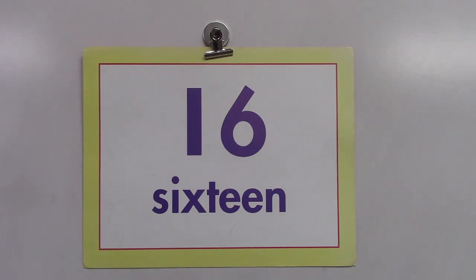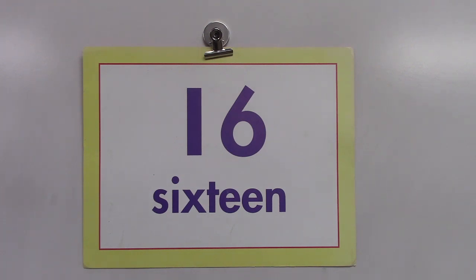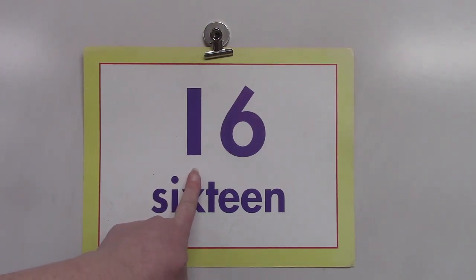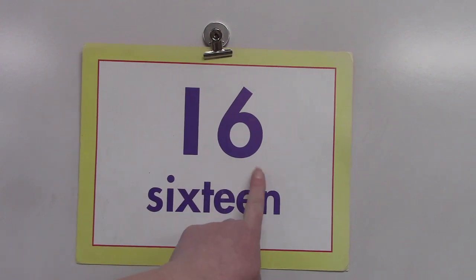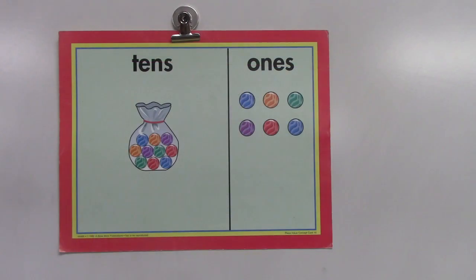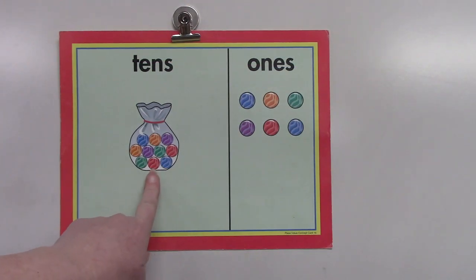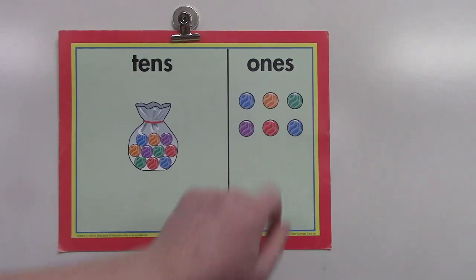We're going to take a look at the number 16. Let's spell it together: S-I-X-T-E-E-N. How many digits are in the number 16? That's right, there are two. The one is in the tens place and the six is in the ones place. Our card shows that we have one group of 10 and six little ones left over.